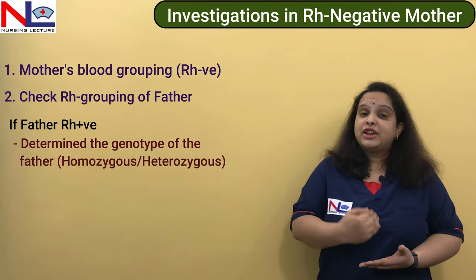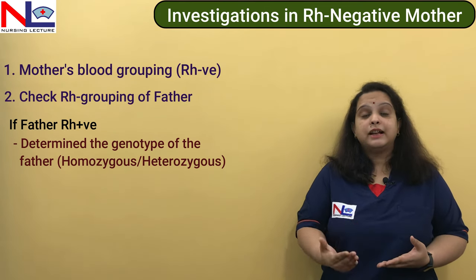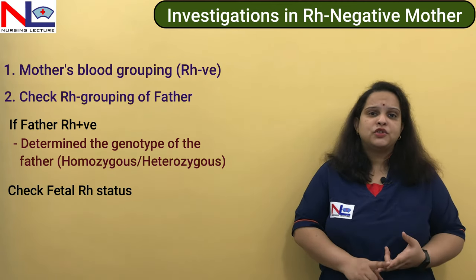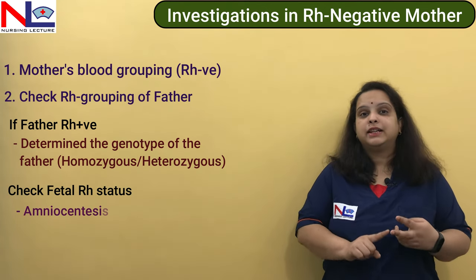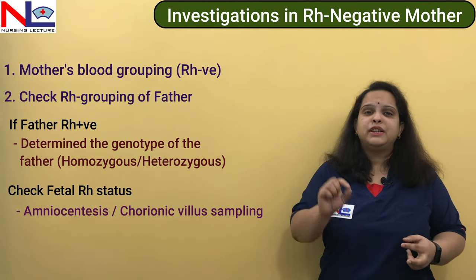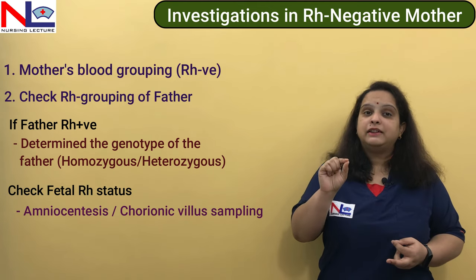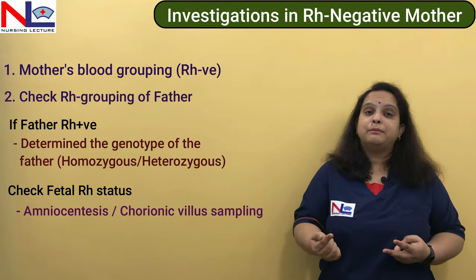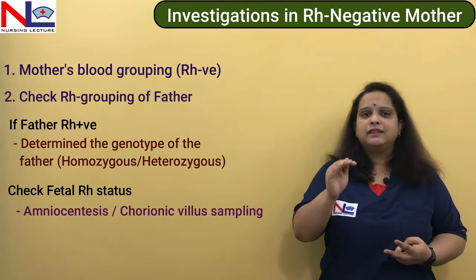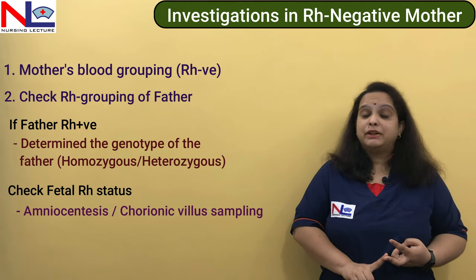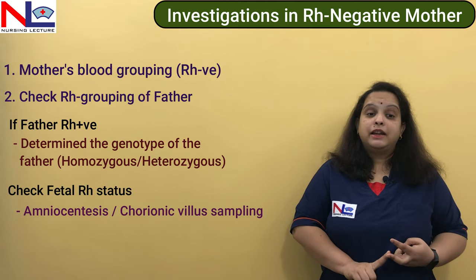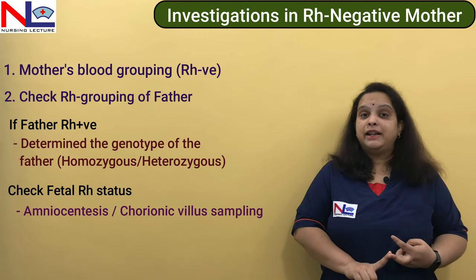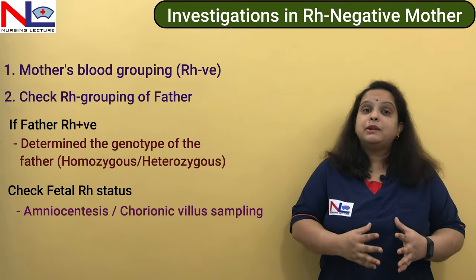We can check the genotype of the father, and if the father is heterozygous, we can also check the Rh status of the fetus. That can be done by two invasive procedures: amniocentesis and CVS (chorionic villus sampling). In amniocentesis, we take out amniocytes and check fetal DNA to determine blood group. In CVS, we take out trophoblasts to identify fetal DNA and blood group. However, both are invasive, and if the woman is not yet sensitized, these procedures can cause fetomaternal bleeding and trigger sensitization, causing her to form antibodies against the Rh antigen.